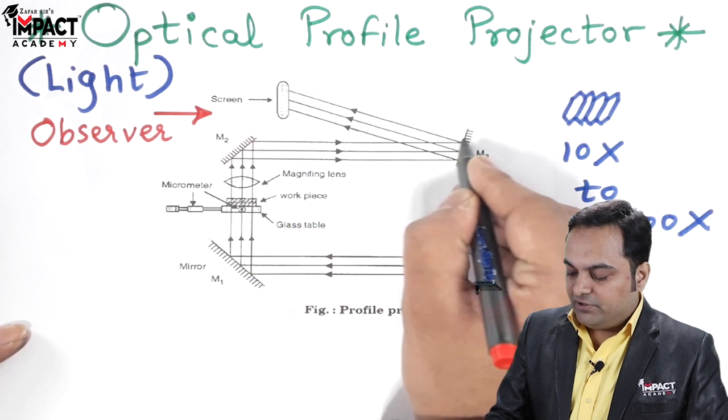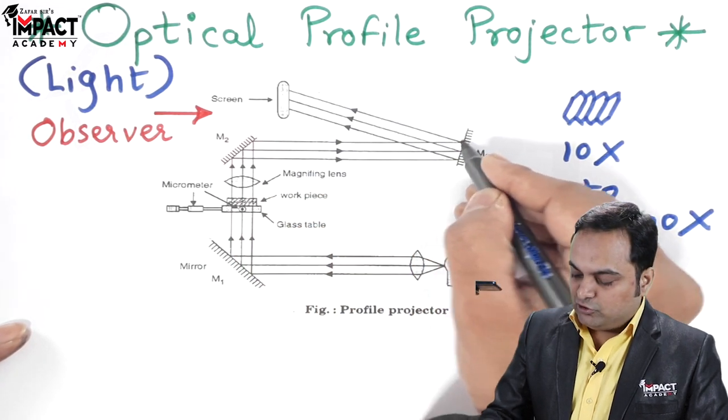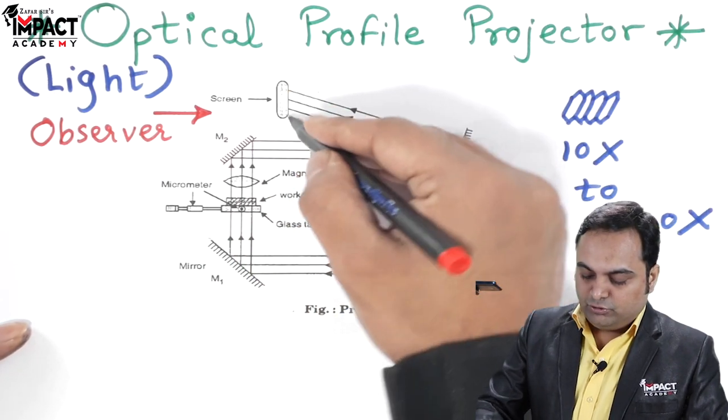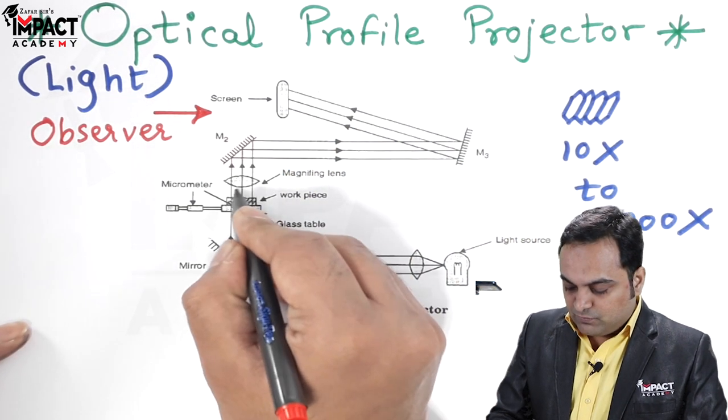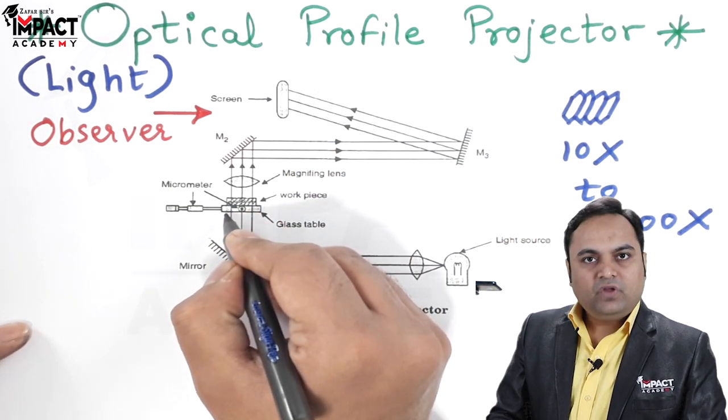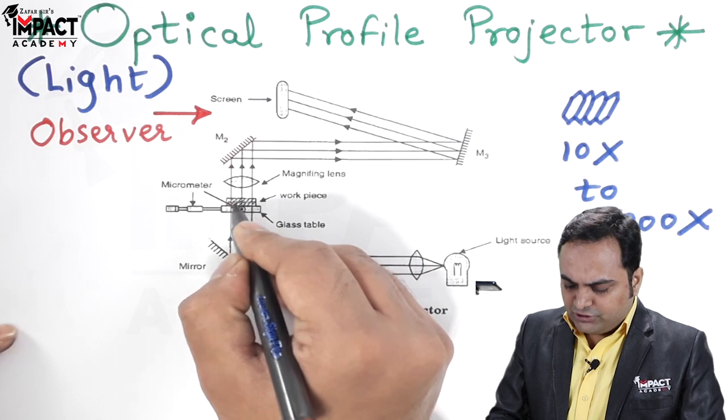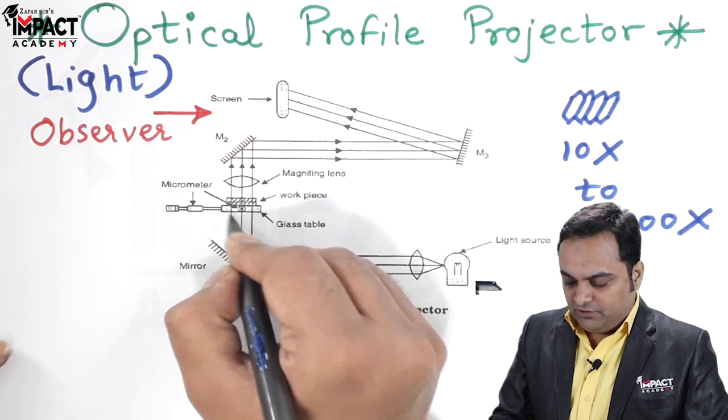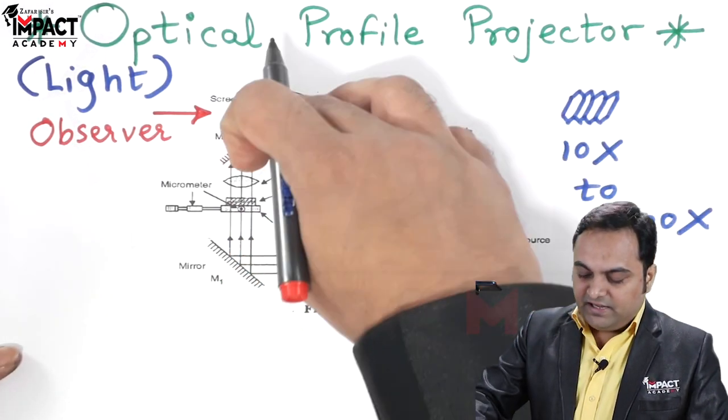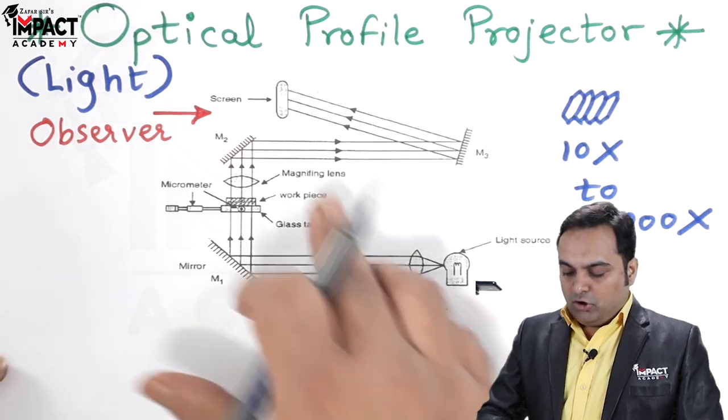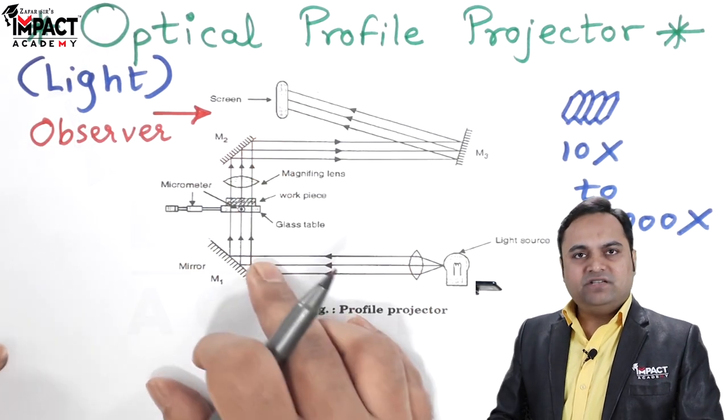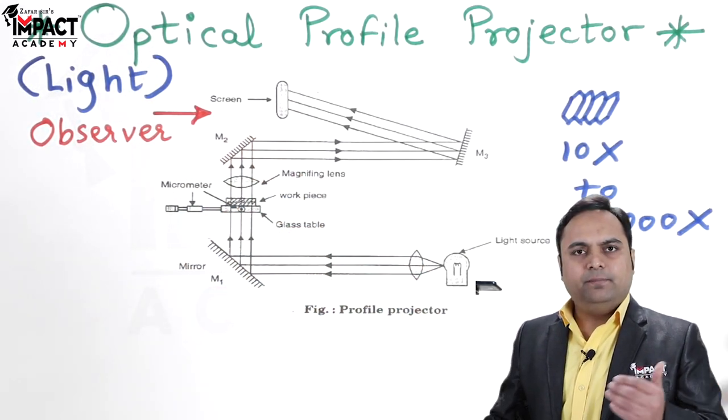From mirror M2, the reflection passes to mirror M3, and finally through M3 it passes directly onto the screen. So whatever small object we are placing onto the glass table is seen as a very big profile on the screen.